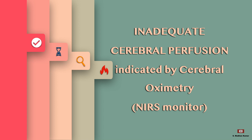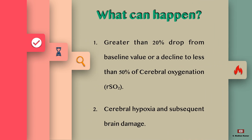In the CPP troubleshooting simplified series, today we will see about inadequate cerebral perfusion as indicated by cerebral oximetry or NIRS monitor. A greater than 20% drop from the baseline value, or a decline to less than 50% of baseline value of cerebral oxygenation, indicates cerebral hypoxia and subsequent brain damage.